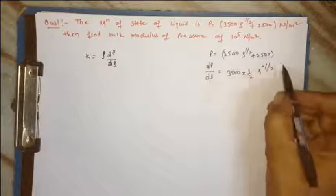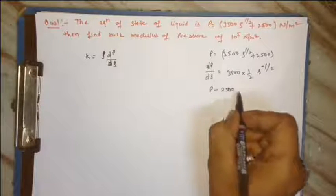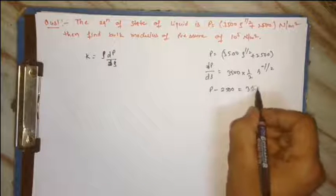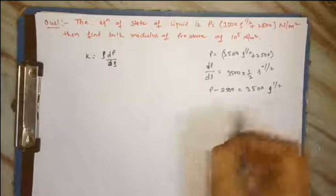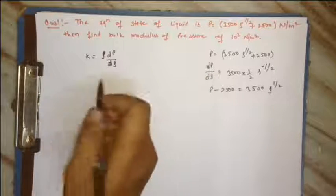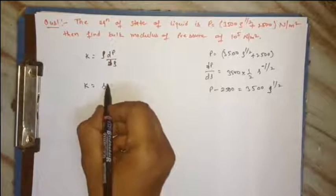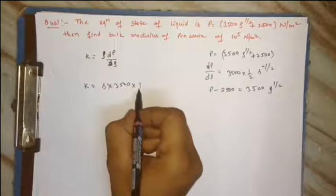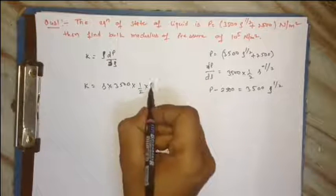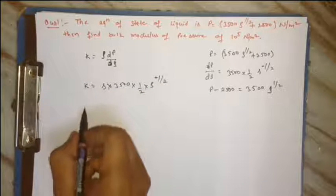I will continue. P minus 2500 is equal to 3500ρ^(1/2). I will put here: K is equal to ρ into 3500 into 1/2 into ρ^(-1/2).